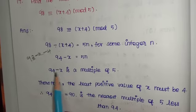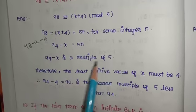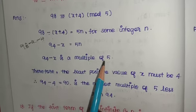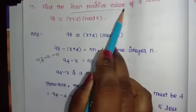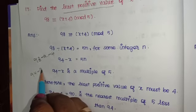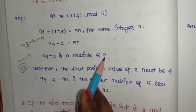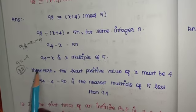This means 94 - x is a multiple of 5. We need the least positive value of x. From 94, if we subtract 9, we get 85, which is a multiple of 5. But that's not the least.